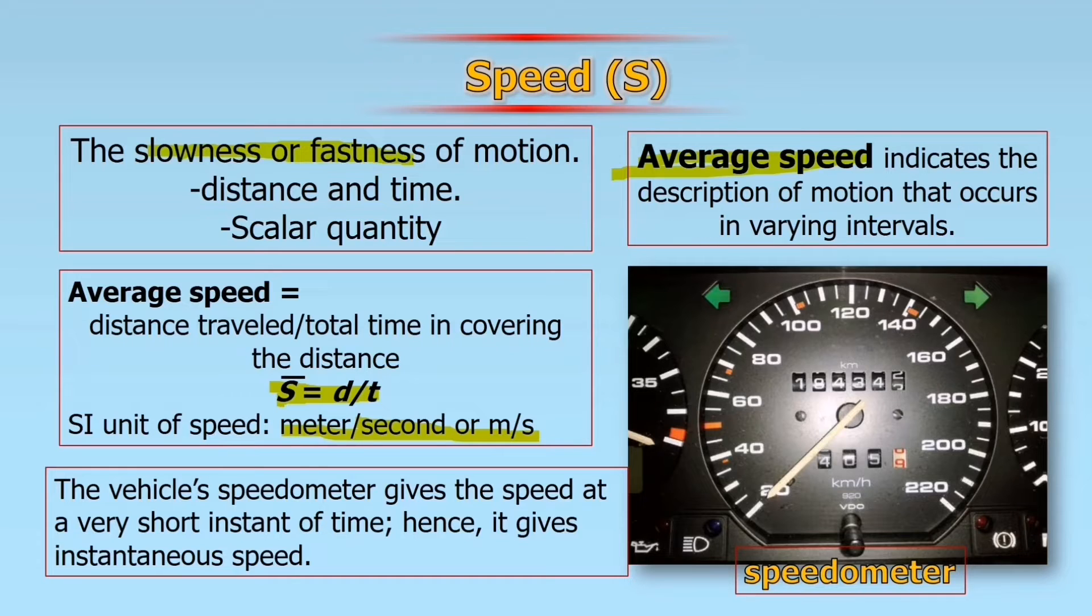Average speed indicates the description of motion that occurs in varying intervals. Using the formula speed equals distance over time. In a car, there is a speedometer that will identify and give the speed at a very short instant of time. It gives instantaneous speed.